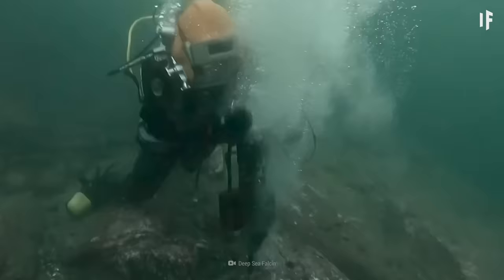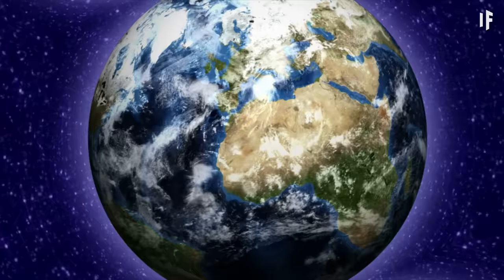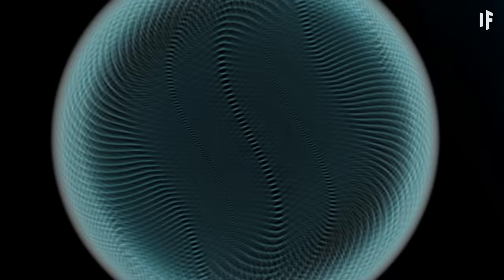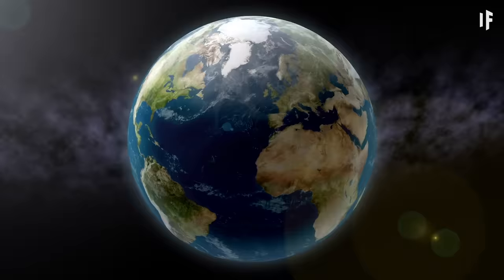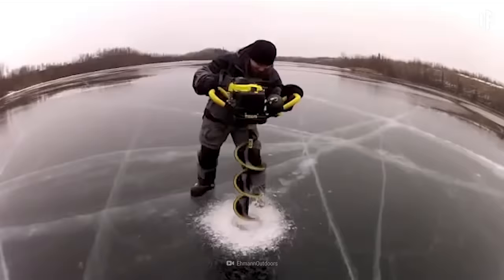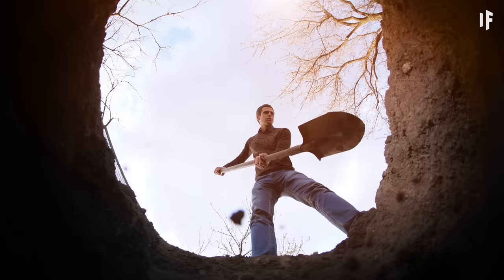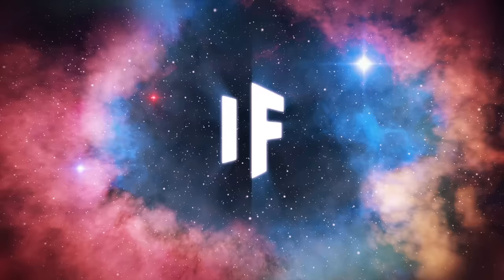Oddly enough, drilling through the crust from the deepest place on Earth wouldn't help you get to the core faster. That's because Earth isn't perfectly spherical. It bulges at the equator, making the drilling distance to the center of the Earth from the Mariana Trench longer. If you wanted to drill all the way through the Earth, you'd be better off starting your project near the poles, as they are closer to the Earth's core. But you know what? I'll leave that story for another What If.